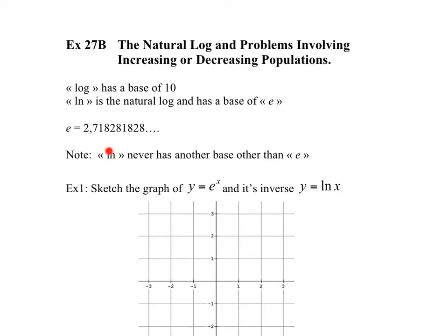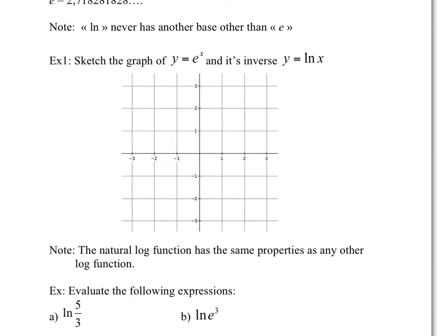So the natural log, this one right here, never has another base other than e. That's the only base it ever has. Let's just get acquainted with e and what it looks like. So let's draw the function e to the power of x. Well, this is the exponential function where the base is 2.7. Again, I'm rounding, but for our sake, 2.7 is good enough.